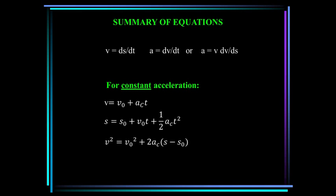Finally, the relationship a·ds = v·dv can be derived from these two equations by eliminating time. Here's a summary of the equations you should take away from this lecture. Velocity is ds/dt. Acceleration is dv/dt. You can combine those two to eliminate time and get a = v·dv/ds. If the acceleration is constant, these equations reduce to these three equations right here.